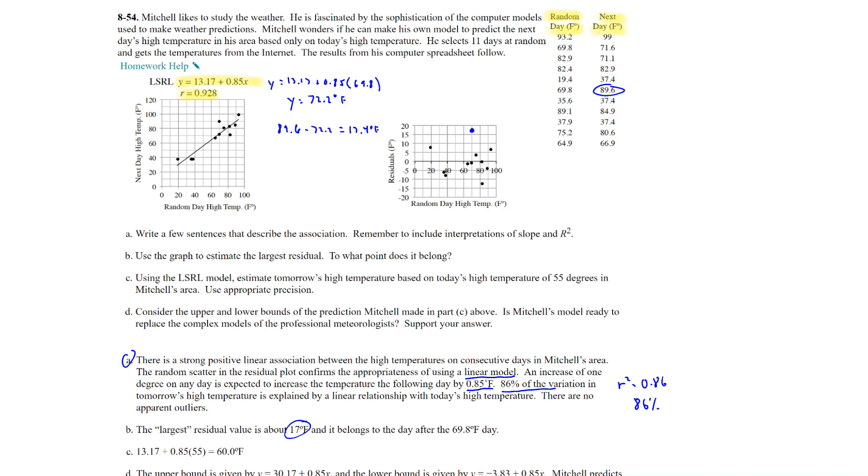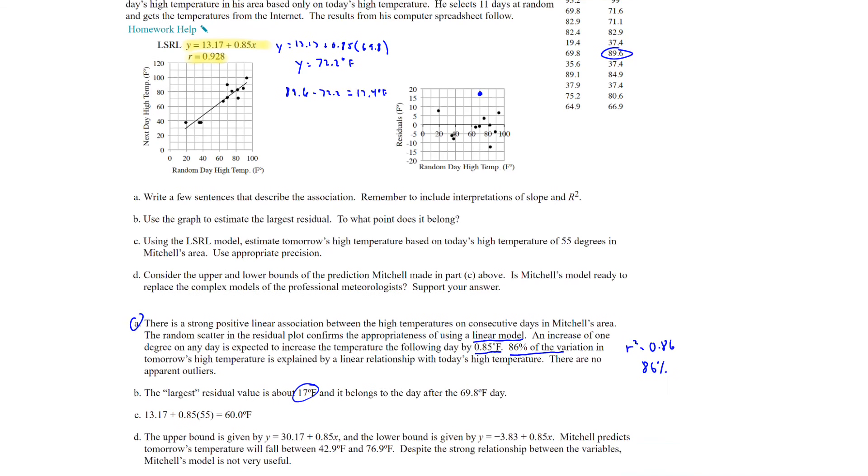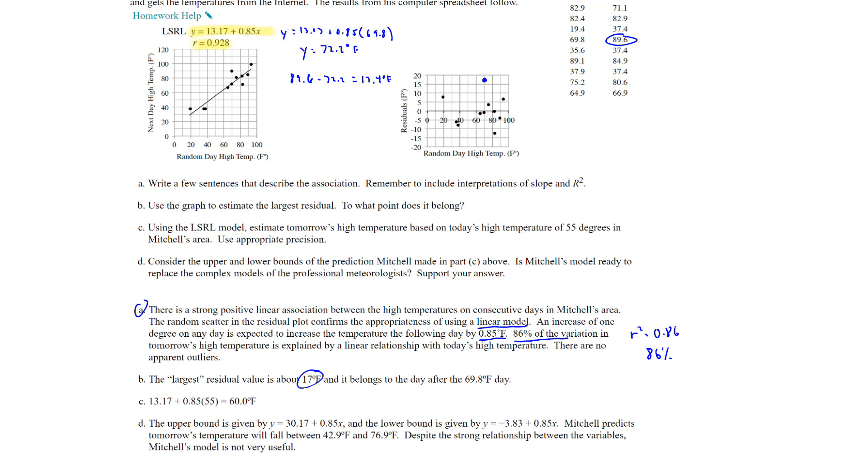Part C says using the LSRL model, estimate tomorrow's high temperature based on today's high temperature of 55 degrees in Mitchell's area. Use appropriate precision. So you can see that they're taking the 55, plugging it in for your X value. And then the predicted temperature for the next day will be 60 degrees Fahrenheit.